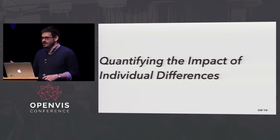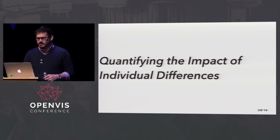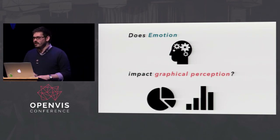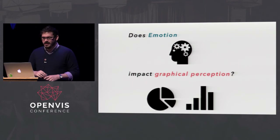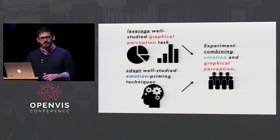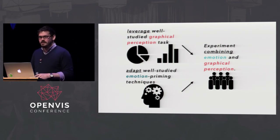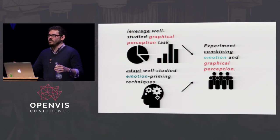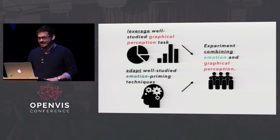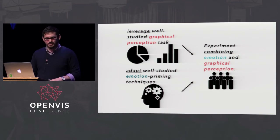Shout out to Nigel for mentioning emotion yesterday. I came across this problem in grad school: does emotion impact graphical perception? Emotion is pretty difficult to study. What we did was leverage a well-studied graphical perception task that's been around since before I was born and replicated many times. We adapted a well-studied emotion priming technique - we went to cognitive psychologists and asked how to prime people emotionally, and they said 'we have ways.' We ended up with an experiment combining emotion and graphical perception.